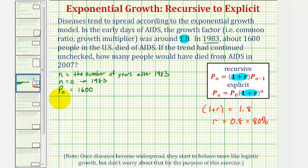And again, we already know that 1 plus r is equal to 1.8. This is all the information we need to write the explicit equation or explicit formula for this exponential growth.